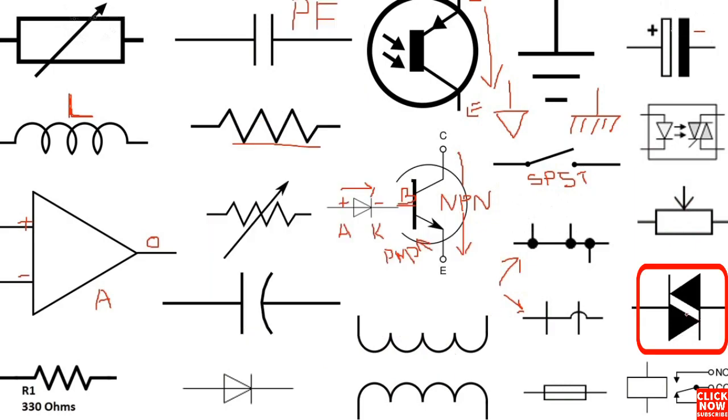This is the triac. As you can see, it is represented by these two diodes — that symbol means the triac.